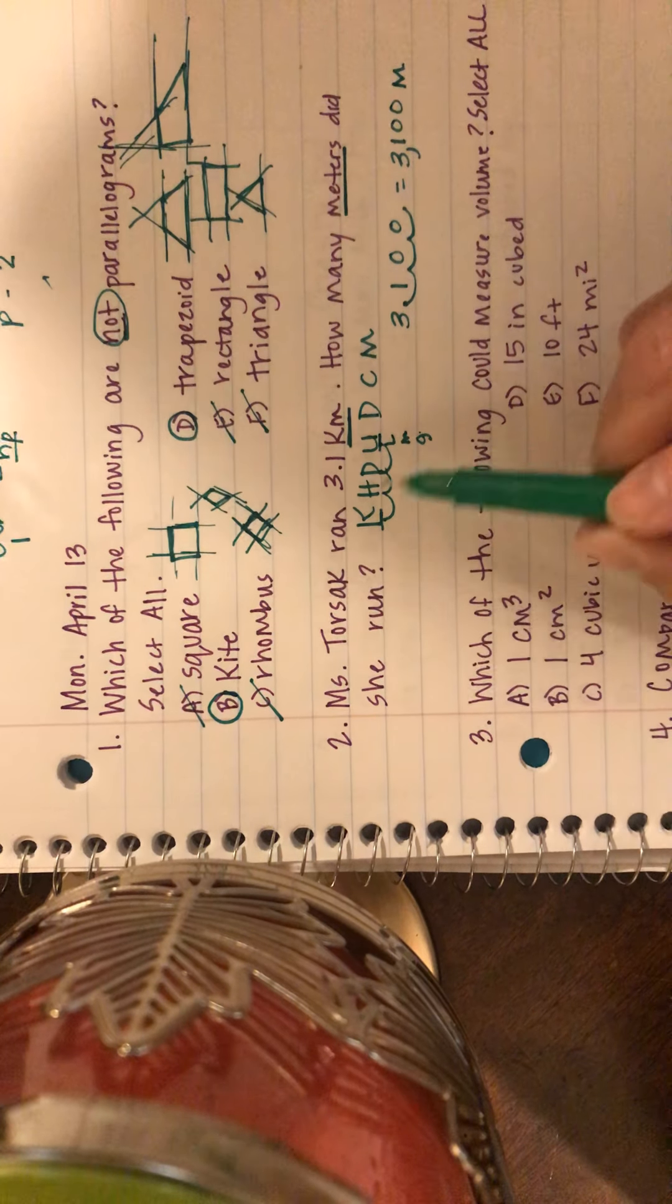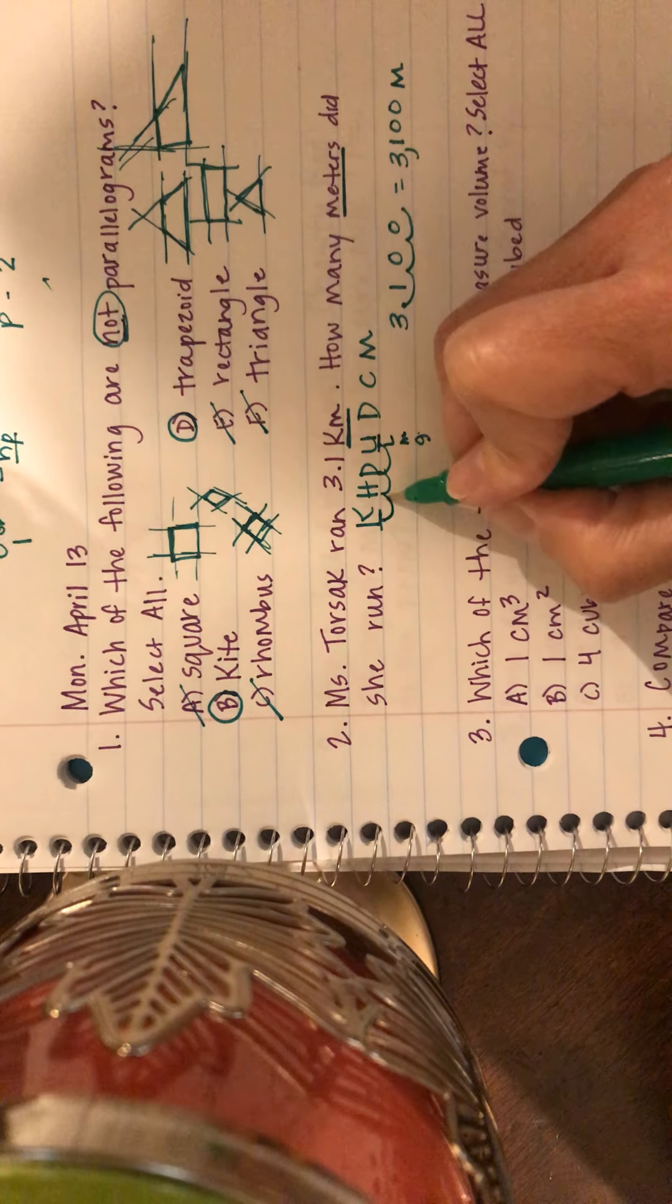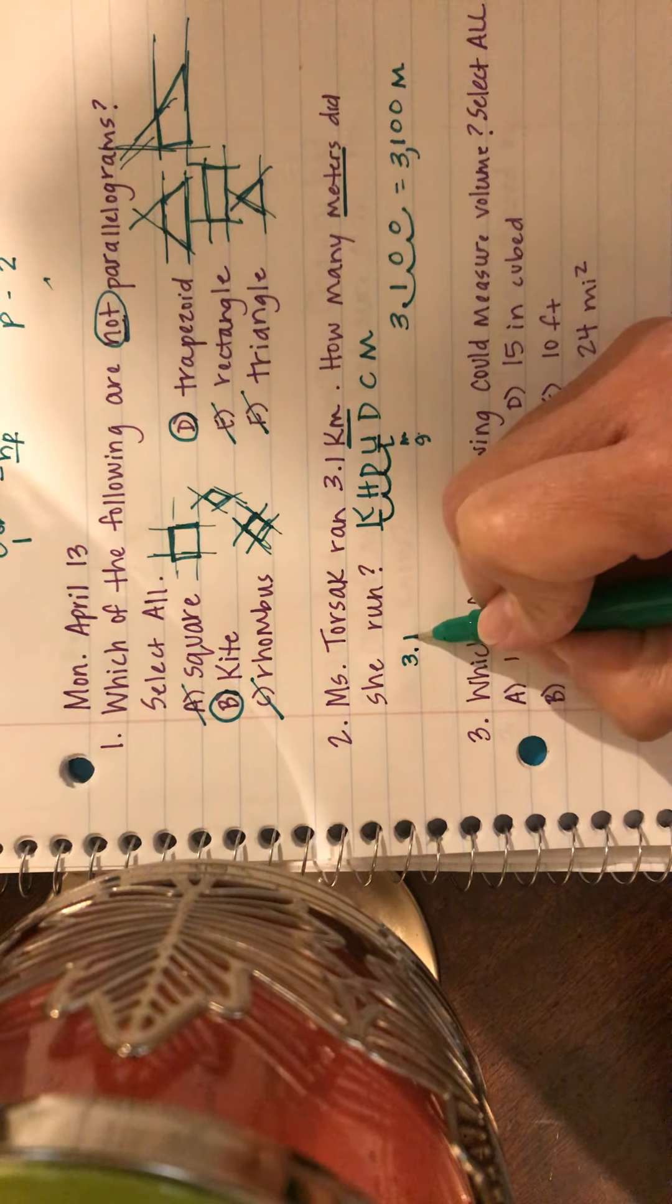And we can also, if you think about with our metric system, we're multiplying by powers of ten. Here's one move, two moves, three moves. So that's the same thing as doing 3.1 times 10 to the third power, which would again give me one, two, three moves, fill in my spaces with zeros, and I still have 3,100.